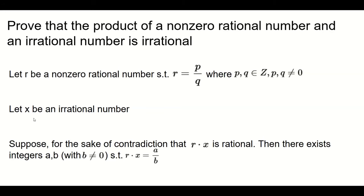And suppose, for the sake of contradiction, that when we multiply R and X, we get a rational number. And because R times X is a rational number, it can be written as A over B, where B is not equal to zero, and A and B are integers.